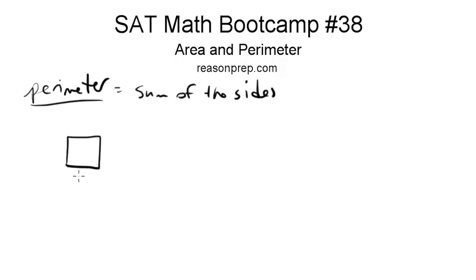That gives you your perimeter. So let's say we have a square with a side of 4. What is its perimeter? Well, it's a square, so all the sides are the same, so they're all going to be 4. And 4 plus 4 plus 4 plus 4 equals 16, so the perimeter would be 16.